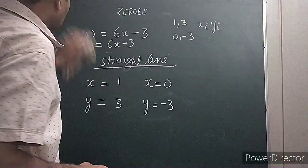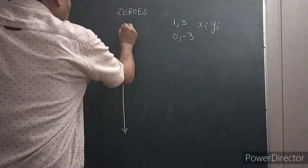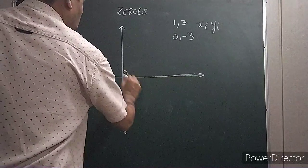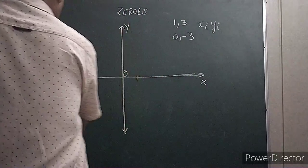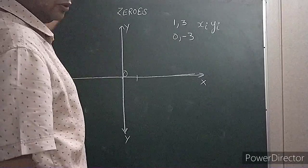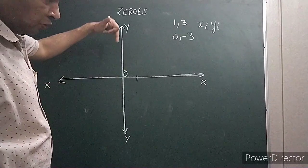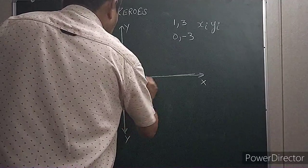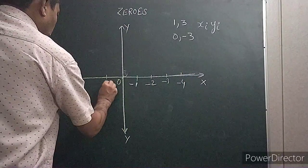Now we will draw the number line and try to plot these two values. This is your origin. This is x and this is y. The positive side going towards the east takes all the positive values of x, going towards the north takes all the positive values of y. The negative direction of x and the south direction take the negative values.